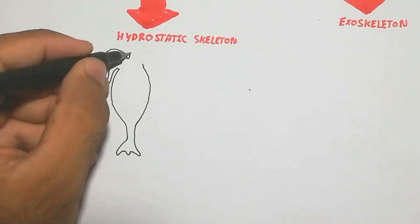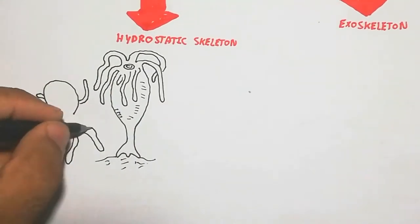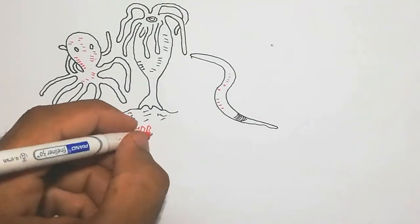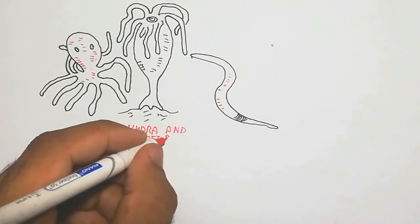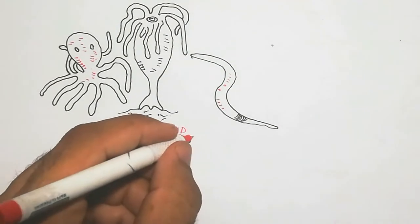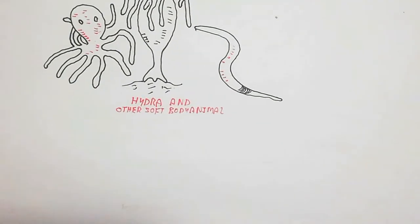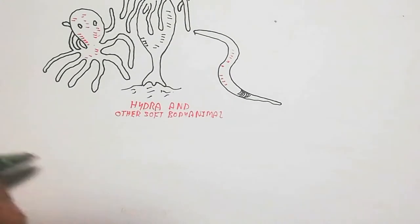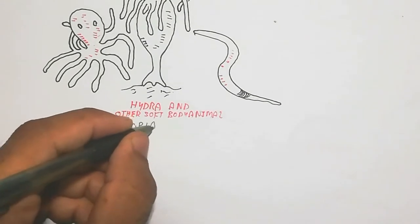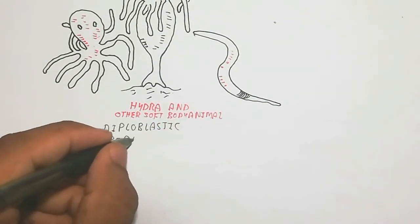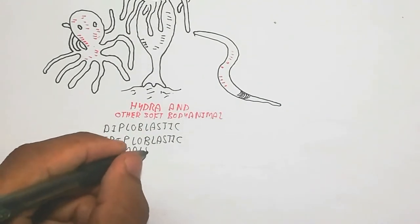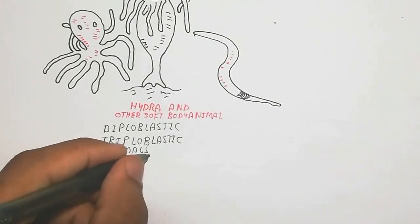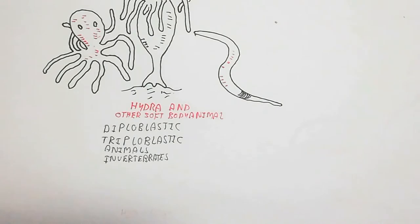The hydrostatic skeleton is a fluid-filled cavity which promotes and gives rigidity to the animal due to water pressure. Hydra and other soft-bodied animals — diploblastic or triploblastic invertebrates — have water and fluid inside them. This is known as the gastrovascular cavity, which is filled with water and some fluid.